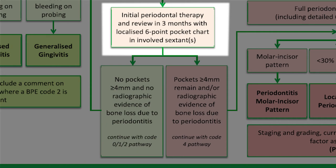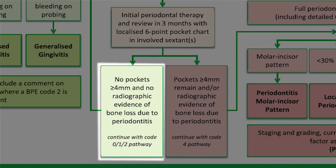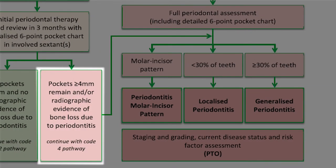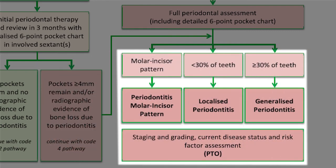Now let's discuss forming your diagnosis. If they had scores of three initially but after initial therapy had no pockets deeper than four millimeters and no radiographic evidence of bone loss, you can diagnose them using the simpler diagnosis system of BPEs of zero, one, and two. If however you find pockets deeper than or equal to four millimeters, or bone loss, or both, you proceed to diagnose using the code four pathway — and if your patient had BPE four from the beginning, you also diagnose them with this pathway.